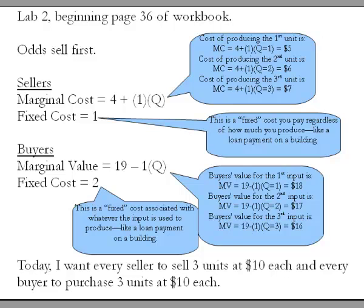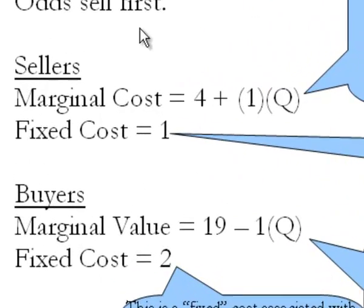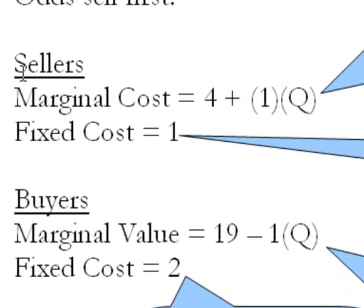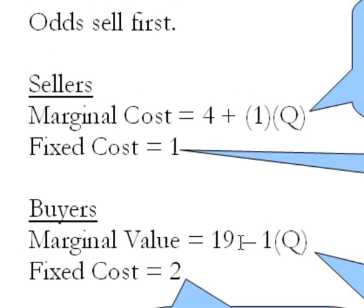Now the first thing you're going to see every day when you come into the lab is something like this on the board. You're going to see a section where it says sellers. It's going to give you a marginal cost curve and a fixed cost. It's going to have a section that says buyers. It's going to tell you the marginal value curve and the fixed cost. It's also going to tell you whether odds or evens sell first. And the very first thing you should do when you come into lab is to record these curves and complete your seller and buyer worksheets just like I'm about to show you.